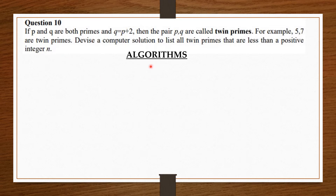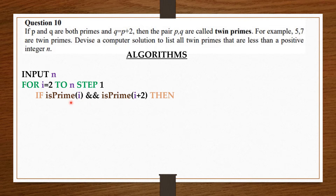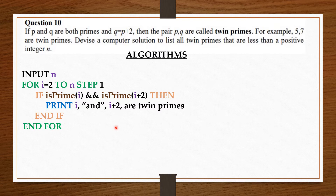For the algorithm, we are going to take the positive integer n from the user, so we say input n. Now let a for loop run from i equals 2 to n, step 1. Then if the i value is prime and the i value plus 2 is also prime, then we print i and i plus 2 are twin primes. The reason we have this for loop is that we are going to check all the numbers that are less than the value n, starting from 2.